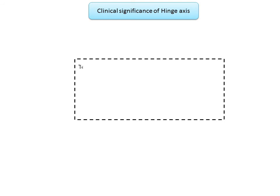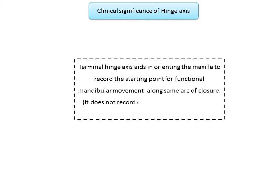A point to note is that the terminal hinge axis aids in orienting the maxillae to record the starting point for functional mandibular movement along the same arc of closure. It does not record centric relation. It is used in full mouth rehabilitation, not for complete dentures. When constructing complete dentures we record centric relation rather than the terminal hinge axis, whereas for full mouth rehabilitation we need to record the terminal hinge axis to orient the maxillae in the articulator.